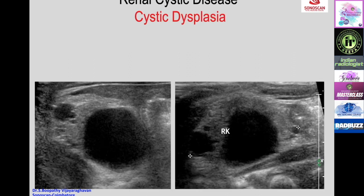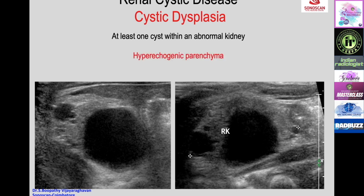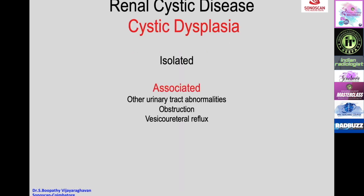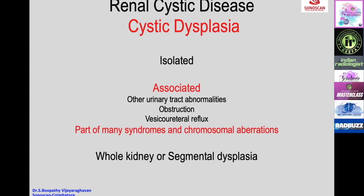Renal cystic dysplasia on ultrasound shows at least one cyst within an abnormal kidney—defined as hyperechoic parenchyma, loss of corticomedullary differentiation, or a smaller kidney. Cystic dysplasia may be isolated or associated with other urinary tract abnormalities (obstruction or vesicoureteric reflux) or form part of many syndromes and chromosomal aberrations, and can involve the whole kidney or part of it.